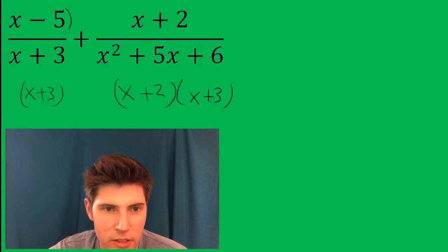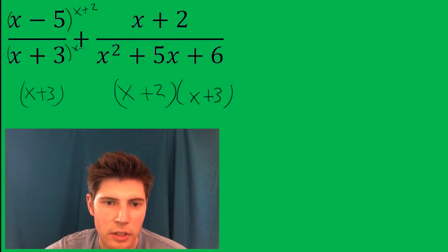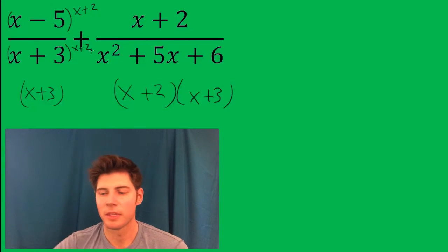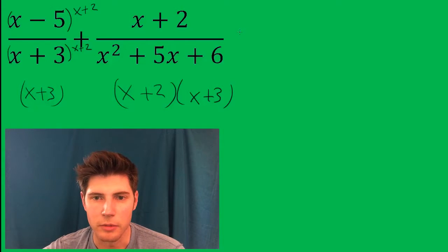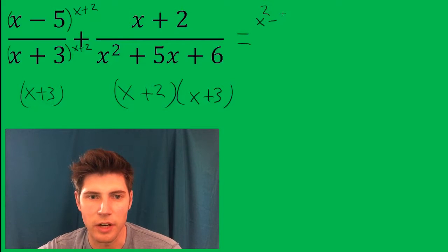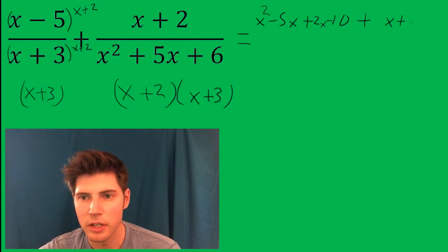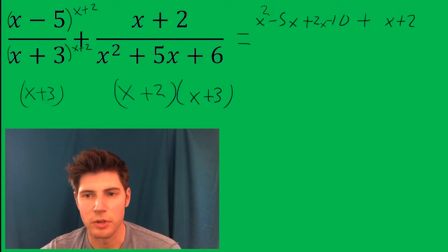So you want to multiply the top and bottom of this by (x + 2). Then they'll have a common denominator. So what does that equal? This one is x² - 5x + 2x - 10 plus x + 2, because of this (x + 2) right here.